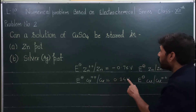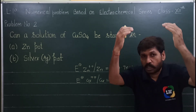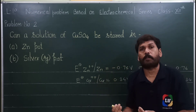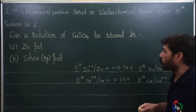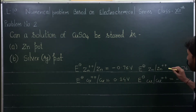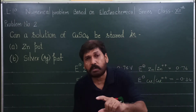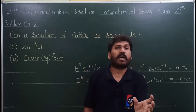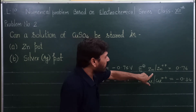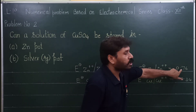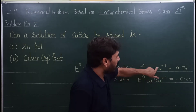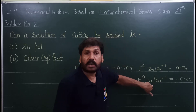अगर zinc कम active है copper से, तो उसे store किया जा सकता है। Electrochemical series में reduction potential के क्रम में कौन-सी metal ऊपर और कौन-सी नीचे आती है — यह previous video में सिखाया है। Zinc का oxidation potential +0.76 है और copper का oxidation potential minus 0.34 है, तो zinc ज़्यादा active metal है।